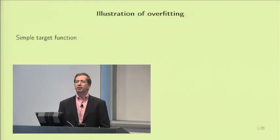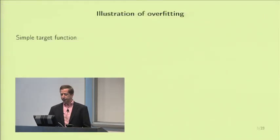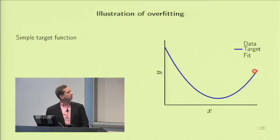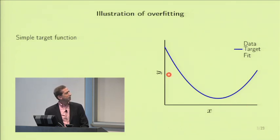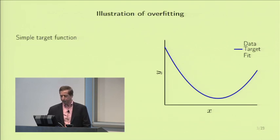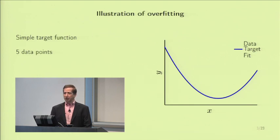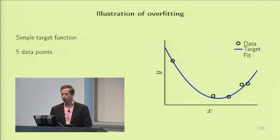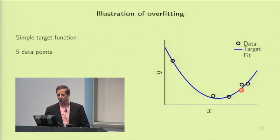Let's illustrate the situation where overfitting occurs. Say we have a simple second-order target function—a parabola—where the input space is the real numbers with a scalar input x. We generate five data points from that target. As you can see, the data points look like they belong to the curve, but they don't belong perfectly to it—so there must be noise. This is a noisy case where the deterministic part of the target is a function and noise is added.